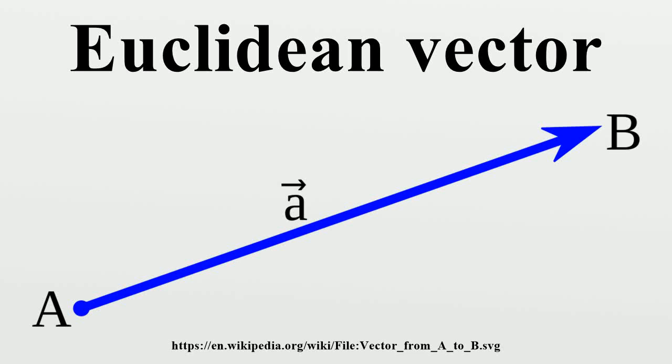In mathematics, physics, and engineering, a Euclidean vector is a geometric object that has magnitude and direction and can be added to other vectors according to vector algebra.